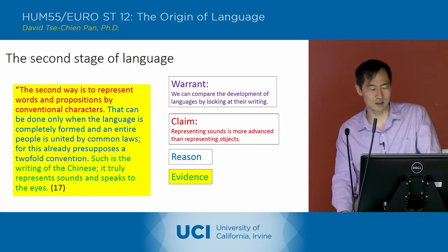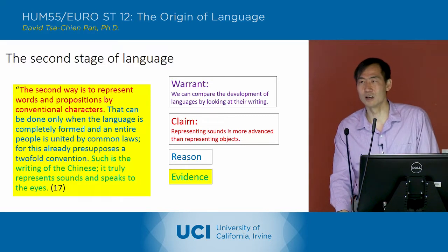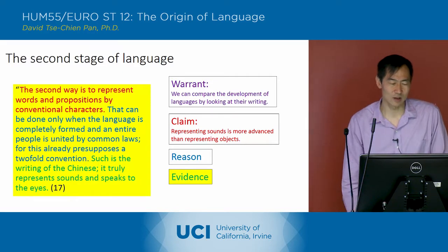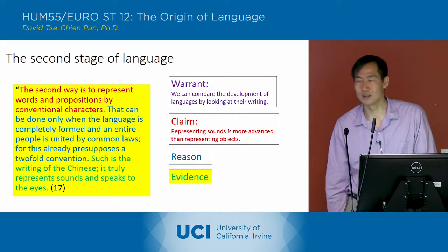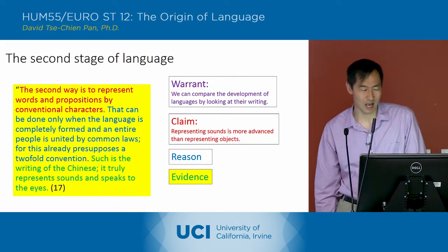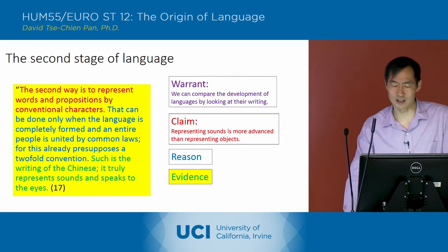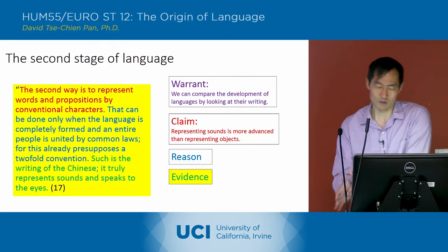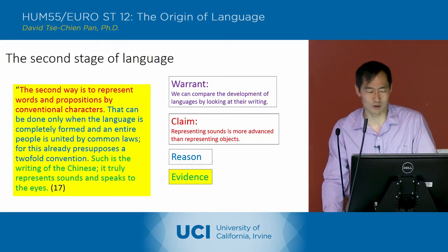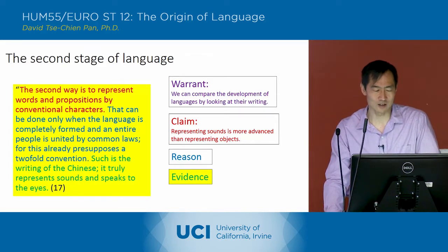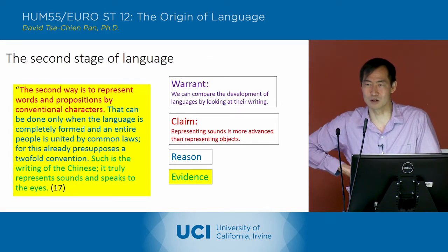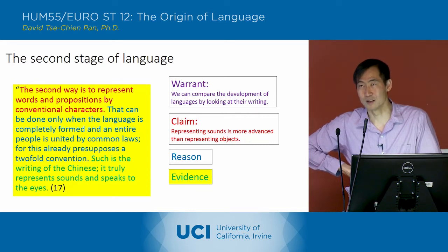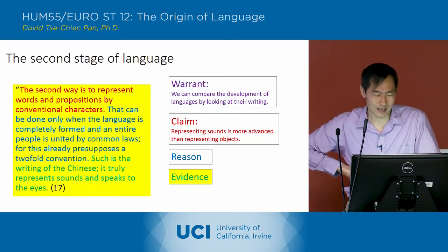His evidence here is Chinese: 'such as the writing of the Chinese, it truly represents sounds and speaks to the eyes.' So here he sees a more advanced kind of language because it's no longer representing objects, but now representing sounds — there's a relationship between the words and the sound.